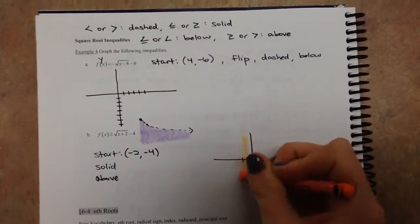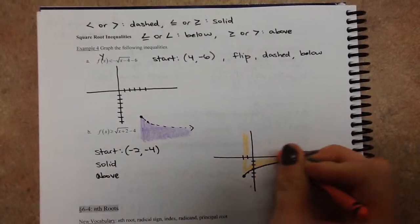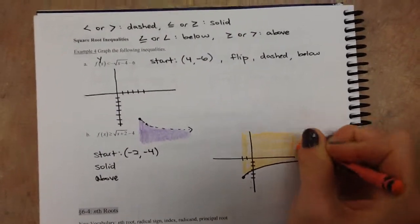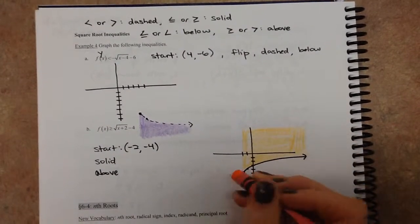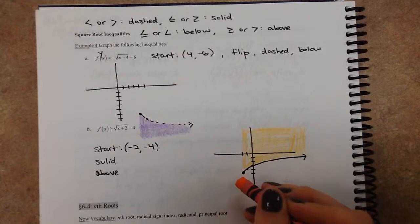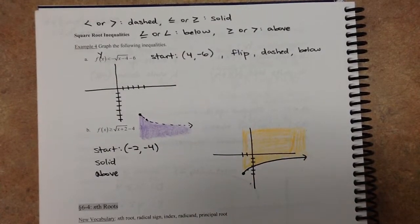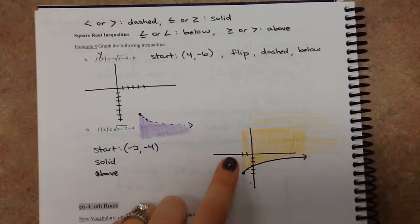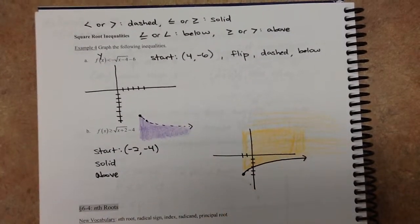Make sure you are using the domain, and we are not going anywhere to the left of where that x value starts. Because you couldn't plug in anything smaller than a negative 2, which means you can't shade anything smaller than a negative 2. So it'll keep going to the right, it'll keep going up, but you can't go any farther to the left, and you definitely can't go underneath. Stay safe.